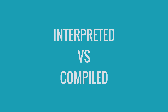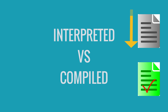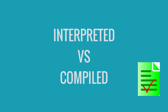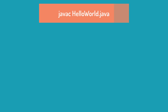When you compile the code, it goes through the complete file of code and then converts it into a binary executable file. In Java, you can do so using javac and then the file name — let's say HelloWorld.java. When you run that command, it creates an executable file that you can run using Java HelloWorld.